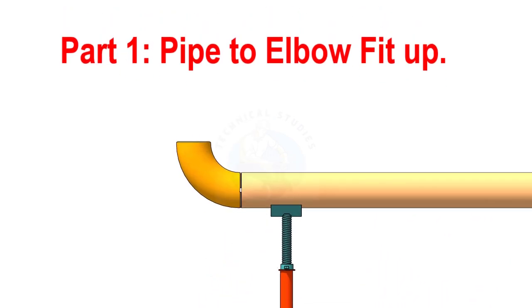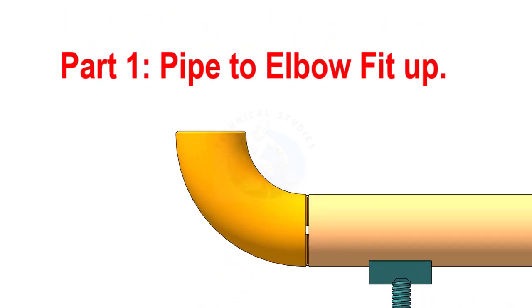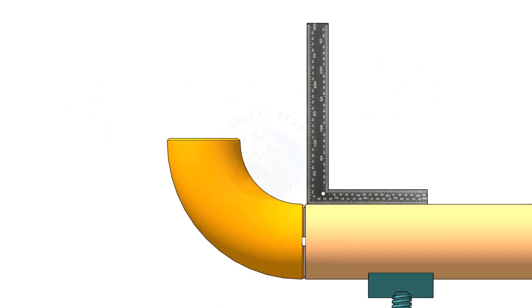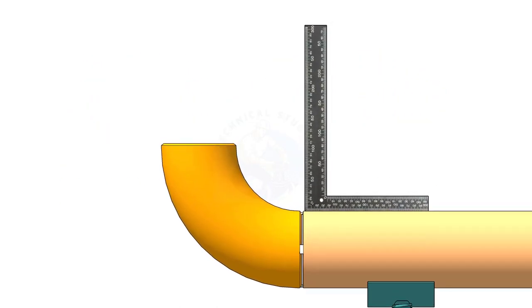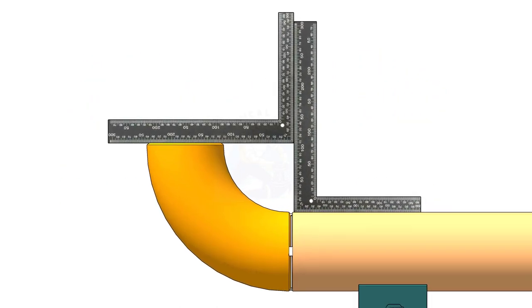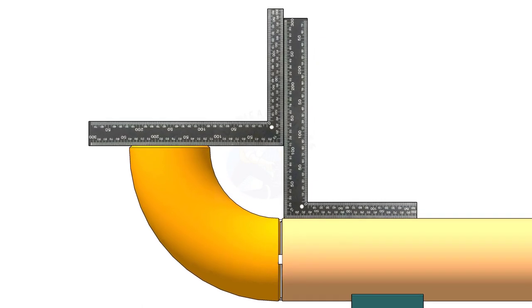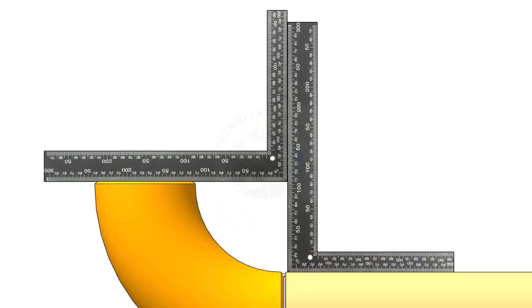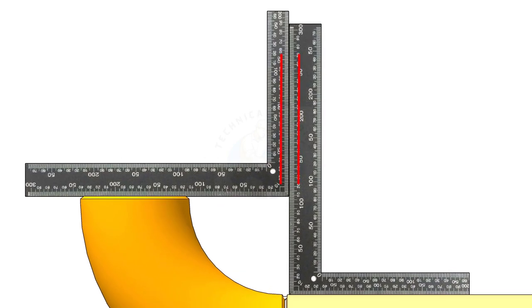There are different methods to check the fit-up of an elbow to a pipe. One method is: hold right angles on the pipe and on the elbow and check the gap. If the right angles are parallel, the fit-up is correct.